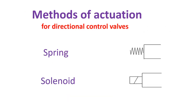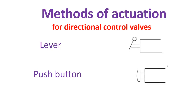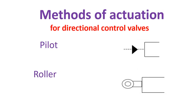The next topic is the method of actuation for directional control valves. This is the symbol for a spring. The next one is the symbol for a solenoid. Then lever, push button, pilot, and roller.